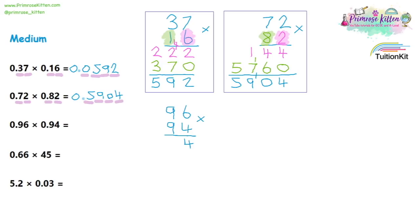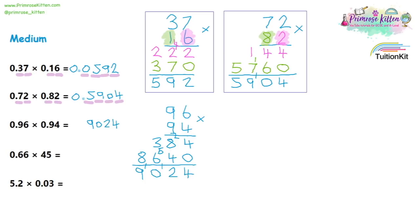Next, 0.96 times 0.94: we start with 96 times 94. Four times six is 24, carry the two. Four times 90 is 360, plus two gives us 384 for that section. Nine times six is 54, carry the five, giving us 8640 for that part. Adding them together gives us 9024. There are four decimal places in the question, so the decimal point moves four places to the left, going in front of the nine, giving us 0.9024.